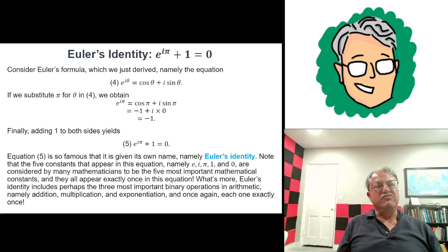Remember the arguments of cosine and sine are radians here. π radians is like 180 degrees. The cosine of π is minus 1, and the sine of π is 0. So we get minus 1 plus i times 0, which is just minus 1. Now we have e to the iπ equals minus 1. When we add 1 to both sides, we get e to the iπ plus 1 equals 0. That's Euler's identity.